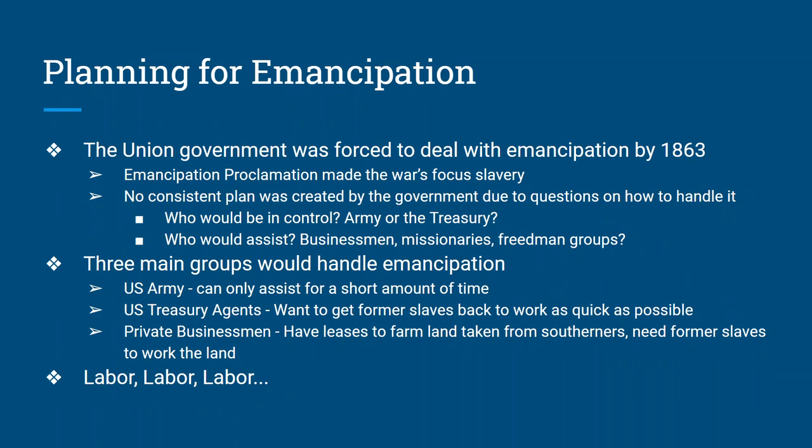You also had to plan for emancipation — the freedom of the slaves. In January of 1863, Abraham Lincoln issued the Emancipation Proclamation and the purpose of the war changed from just saving the Union to ending slavery. Just like there was no plan on how to reconstruct the South, there was really no plan on what to do with the slaves. There were questions about who would be in control — the army, the treasury, somebody else? Questions about who would help — businessmen, church missionaries, freedmen groups, abolition groups? They didn't know. When it came down to it, there were three main groups that were going to handle emancipation.